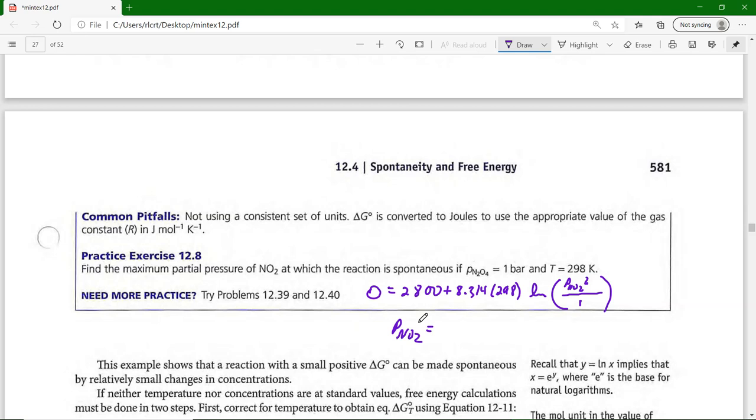I take 2800 to the other side, so I get -2800 / (8.314 × 298), then take the inverse natural log of that. That gives me the square of the partial pressure of NO₂. I take the square root and I get 0.57, which is correct—0.57 bar.